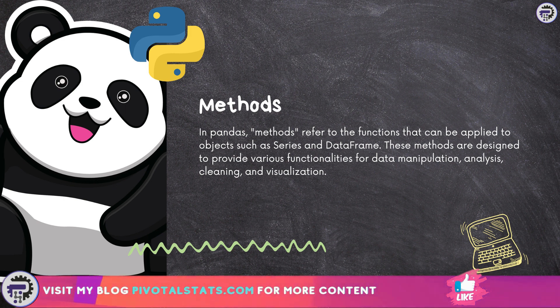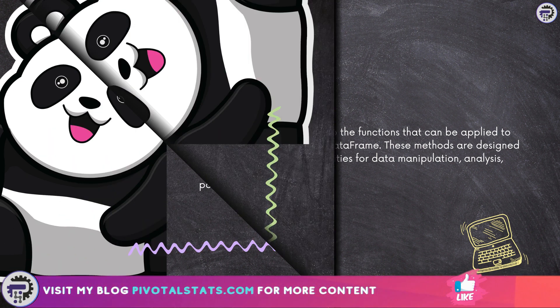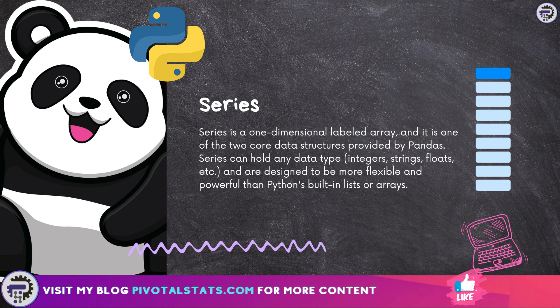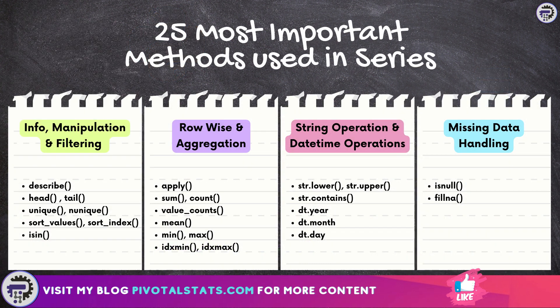Series is one of the fundamental data structures provided by the pandas library, and is widely used for data manipulation and analysis in Python. A Series is simply a one-dimensional labeled array — or, to put it simply, an object with one column of data. It can hold many data types like integers, floating point numbers, strings, and so on.